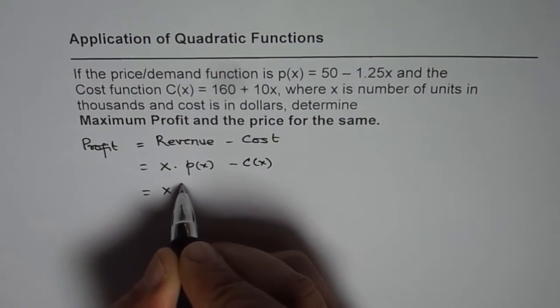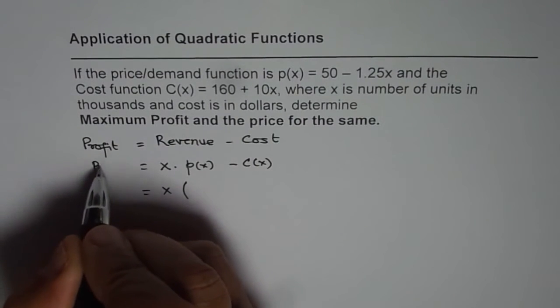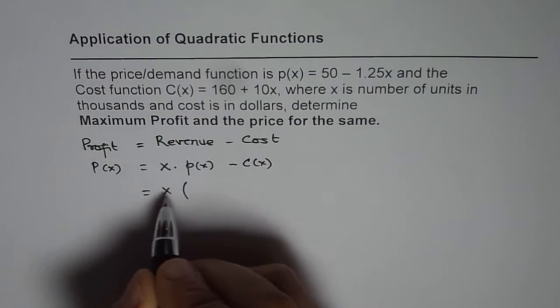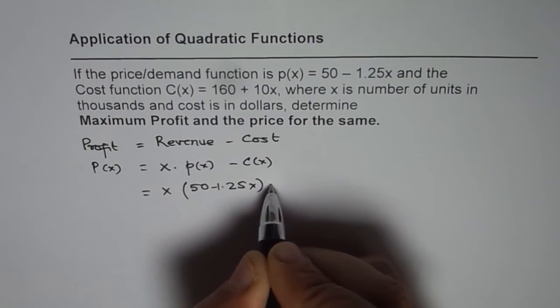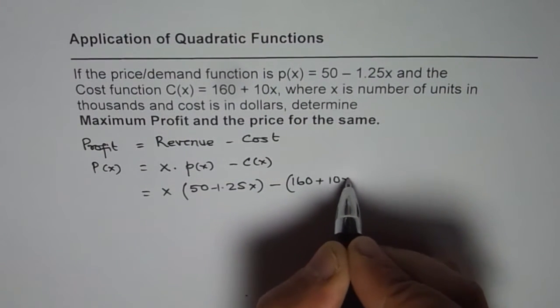So let's write down these functions and develop the formula for profit. And let's call this profit function as P of x. So we have x times 50 minus 1.25x minus the cost function which is 160 plus 10x.